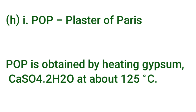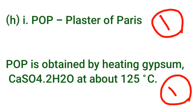BOB's long form is Plaster of Paris. BOB is obtained by heating gypsum — CaSO4·2H2O — at about 125 degrees Celsius.